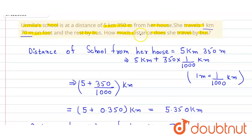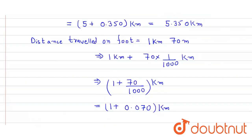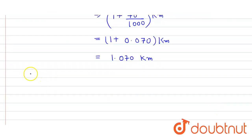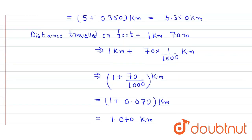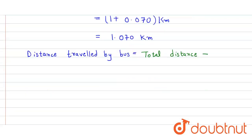Now we have to find the distance she travelled by bus. The distance travelled by bus equals the total distance between her house and school minus the distance travelled on foot.